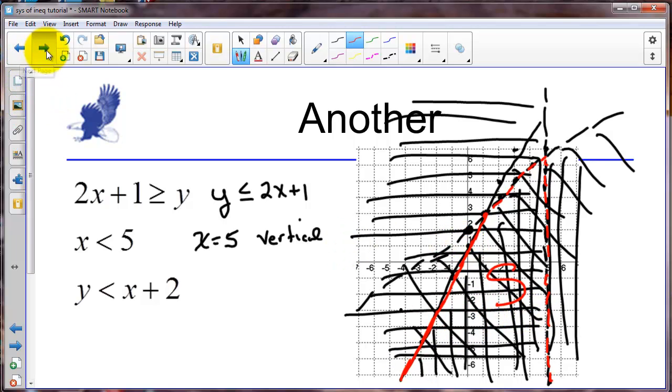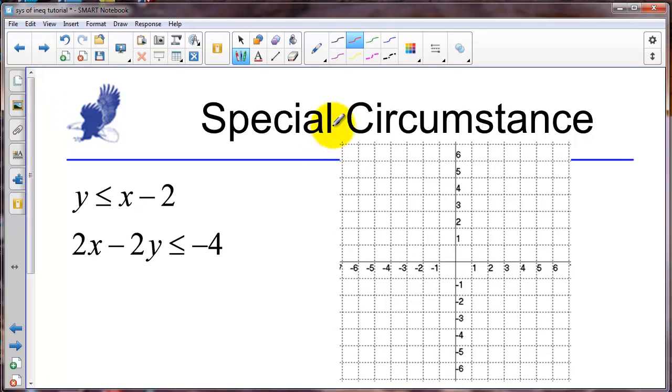Our final thing here to wrap up the tutorial is a special circumstance. Let's quickly graph these two inequalities. So we have a y-intercept of negative 2 and a slope of 1. So we have this boundary line here.